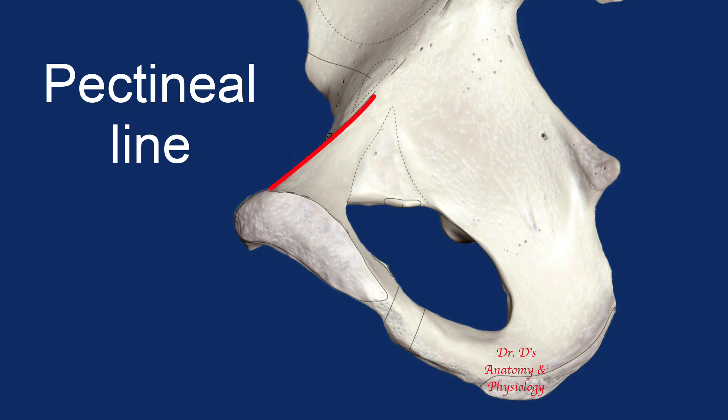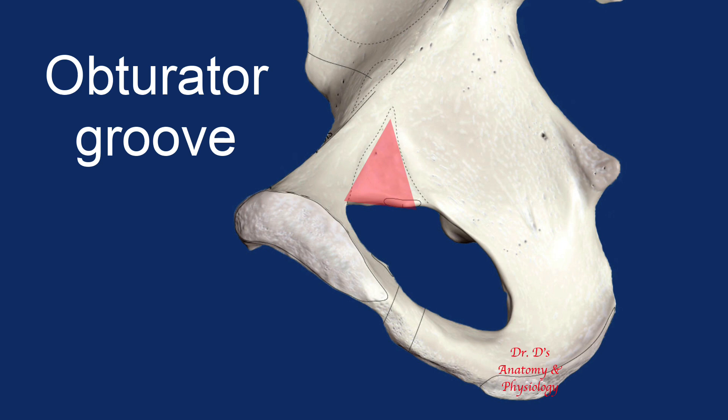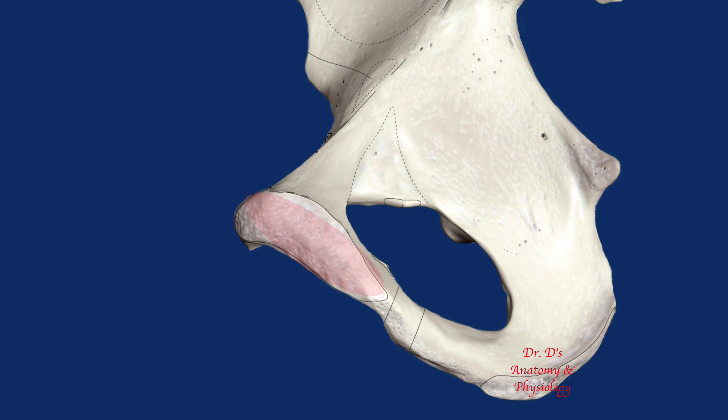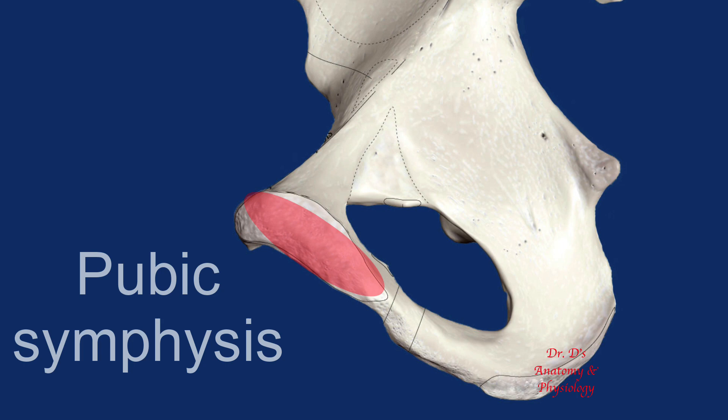On the superior ramus of the pubis there is a groove called the obturator groove. On the medial side of the body of the pubis there is a rough surface where the fibers of the fibrocartilage of the pubic symphysis attach. This surface essentially marks where the pubic symphysis is located in the living human.